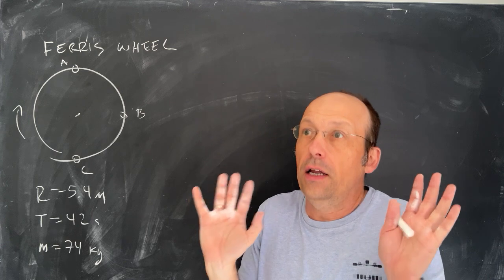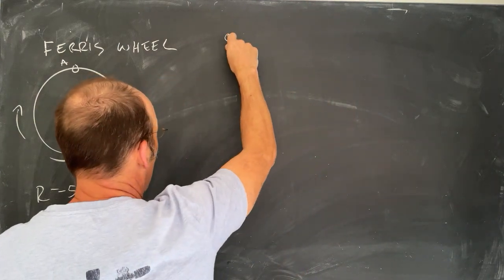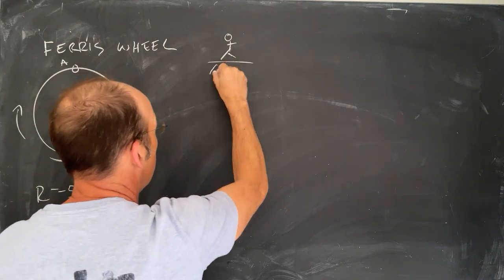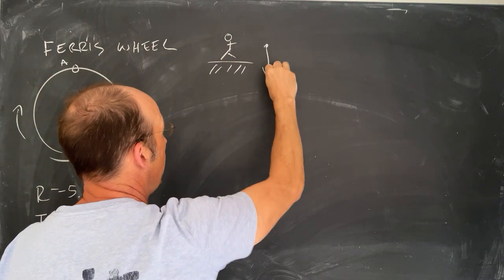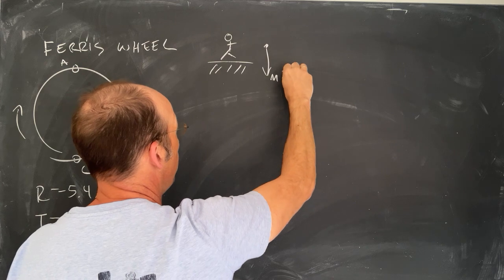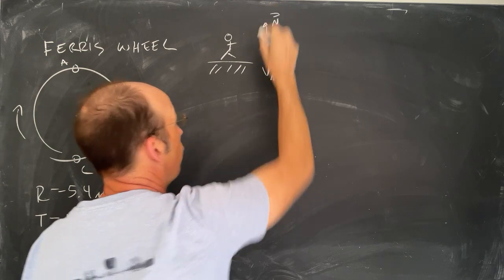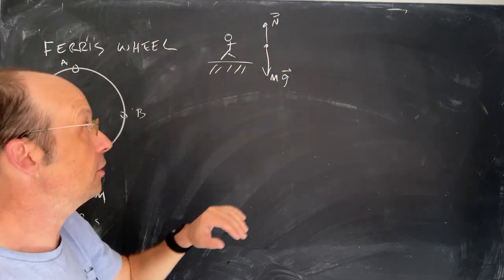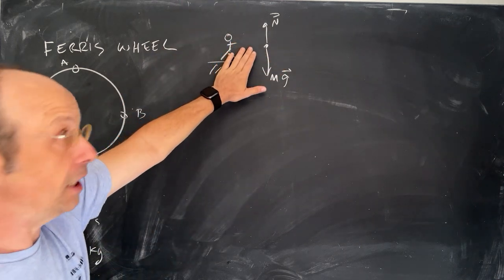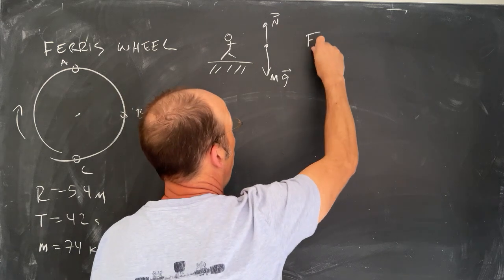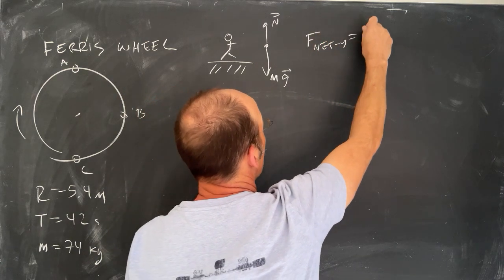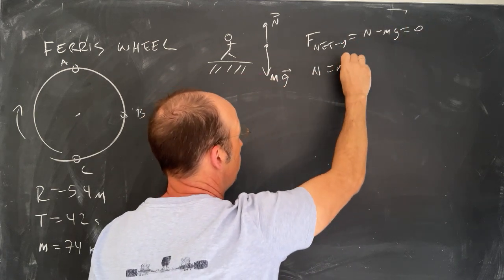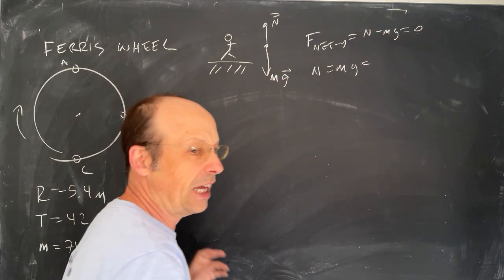Let's start with a person standing on the ground. If I want to calculate the apparent weight, the apparent weight is the normal force, right? Because if you're in an elevator and you're accelerating, you feel heavier, but gravity doesn't change. So if they're just staying there stationary, then the net force in the Y direction is equal to N minus Mg, and that's zero, so N would be equal to Mg.